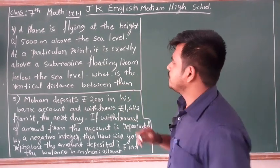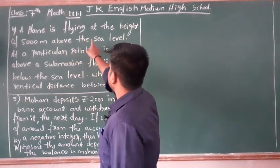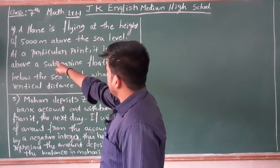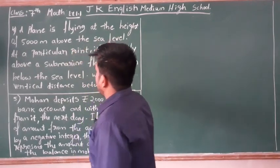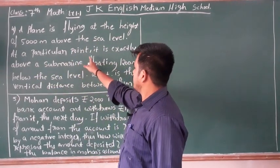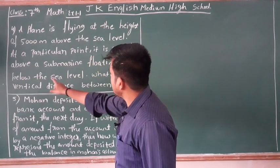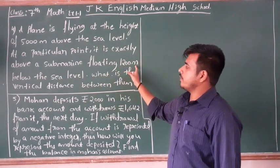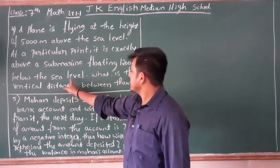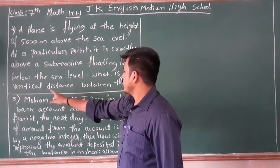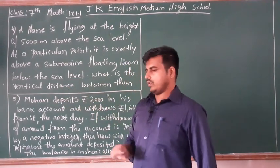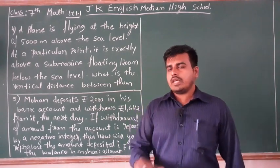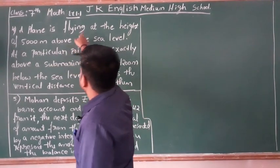Now I will solve the fourth question. Let me read it for you: a plane is flying at a height of 5000 meters above the sea level. At a particular point, it is exactly above a submarine floating 1200 meters below the sea level. What is the vertical distance between them? Here we have to use the integer concept.